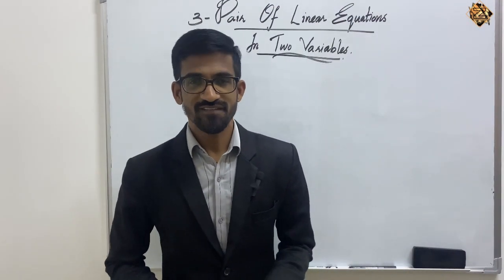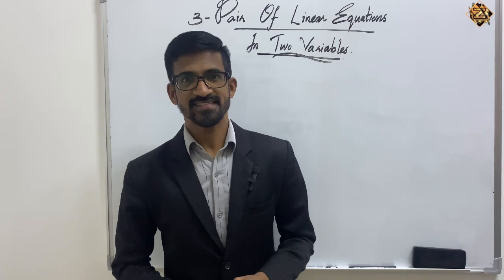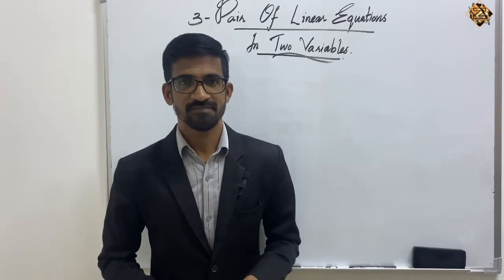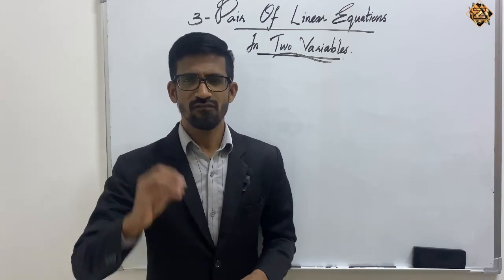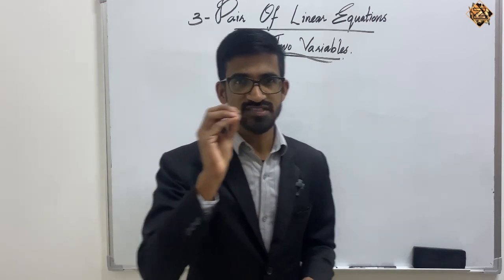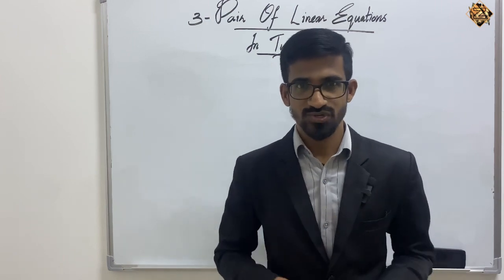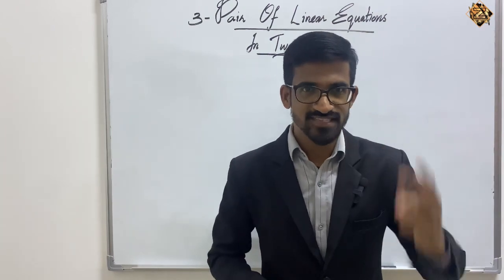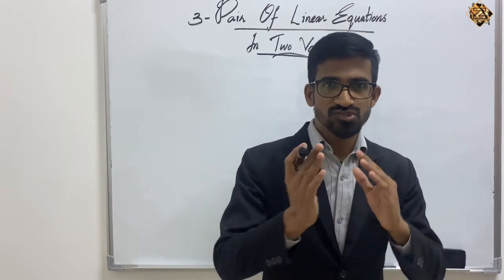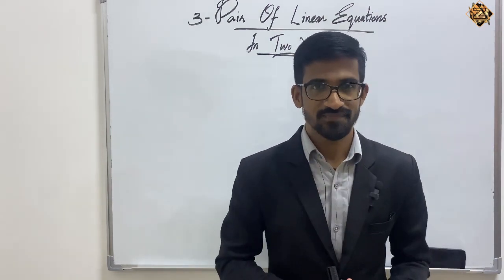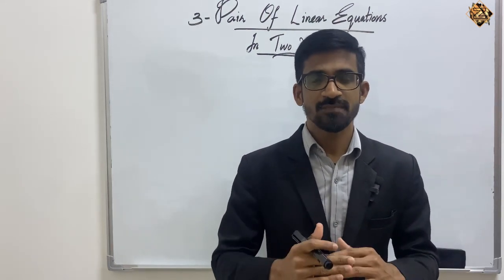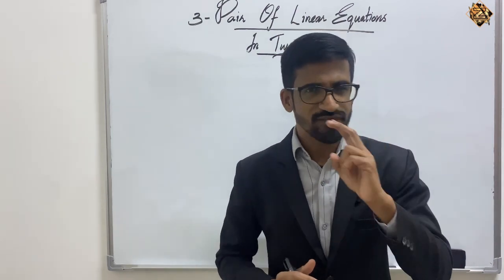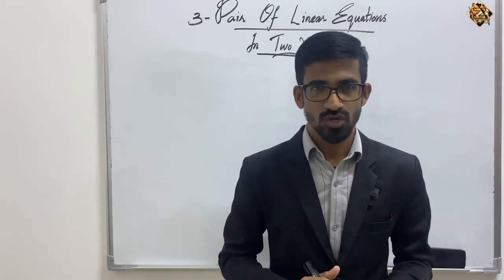Hi dear students, today we are going to discuss a new chapter of great length — that is Chapter 3: Pair of Linear Equations in Two Variables. In grade 8 we already studied linear equations in one variable and learned how to solve such equations. In grade 9 we learned linear equations in two variables x and y and studied how to solve them graphically. Now in grade 10 we will learn about a pair of linear equations — two equations at a time in two variables x and y.